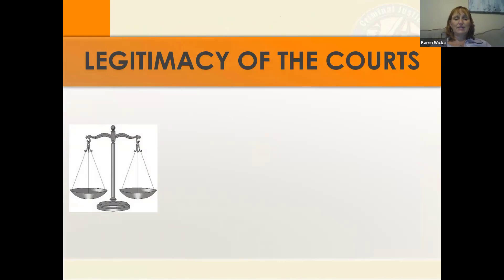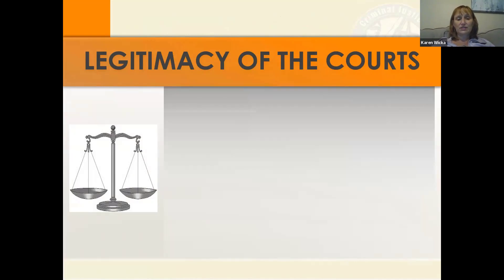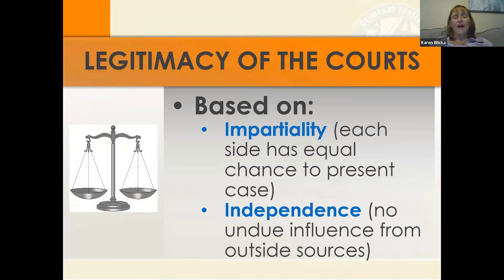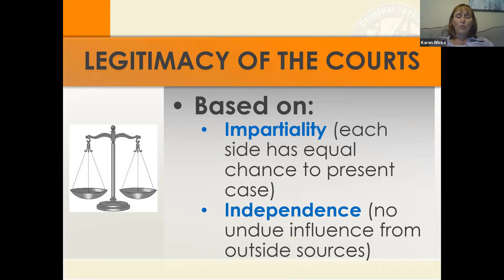Now, why do people follow courts? Courts don't really have an enforcement mechanism — the police don't necessarily work for them. But we believe in the rule of law, which gives the court legitimacy. People will follow the court even without an enforcement mechanism if they believe it is legitimate. Two things that contribute to legitimacy are impartiality — each side getting an equal chance to present the case — and independence, meaning outside forces cannot influence the courts. Those two factors help people be willing to follow what the court orders.